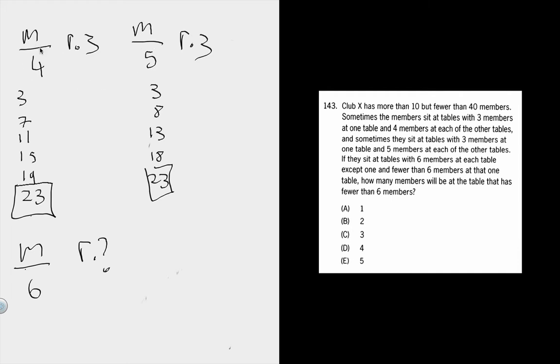We're going to get the LCM of 4 and 5, which is just their product because they don't share any factors, and you add the remainder. So that's 23. You want the LCM plus the remainder.